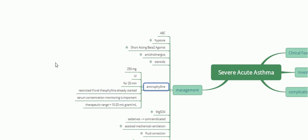Aminophylline decreases intracellular calcium concentration and thereby helps in smooth muscle relaxation. The dose is 250 mg IV given over 20 minutes. If the patient was already on oral theophylline, aminophylline should not be given, because the therapeutic index is extremely low and there is a high risk of serum toxicity. Monitoring of serum aminophylline concentration is essential; the therapeutic range is 10 to 20 micrograms per mL.